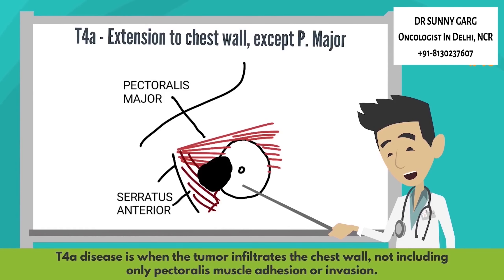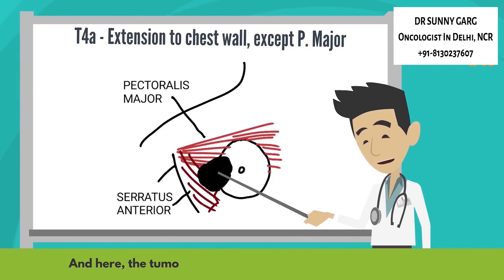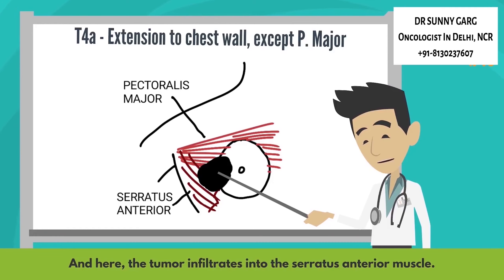T4A disease is when the tumor extends to the chest wall, not including only pectoralis muscle adhesion or invasion. Here the tumor infiltrates into the serratus anterior muscle.